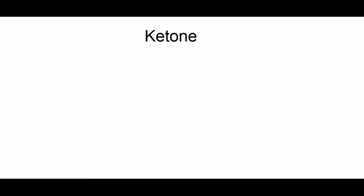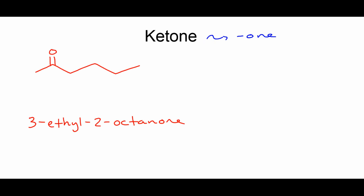A ketone's suffix is also in the name, spelled O-N-E. Looking at a zigzag example, our numbering priorities are: first, a double or triple bond must get the lowest carbon number, then the functional group. Numbering left to right gives branches at positions 2 and 3 but puts the functional group at position 5, which is too high. Going the other direction gives the functional group position 2, which is correct.